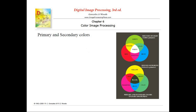Primary colors for light are different from primary colors for pigments. Here you can see two diagrams: one shows how primary and secondary colors work in the case of light, and another illustrates the interplay of primary and secondary colors for pigments.